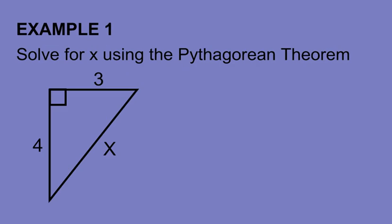Let's look at an example. Solve for x using the Pythagorean Theorem. I need to find my hypotenuse. So I'm going to look for my right angle and look opposite for the side and label that c.